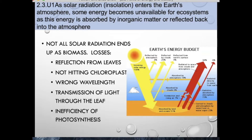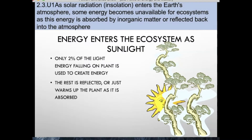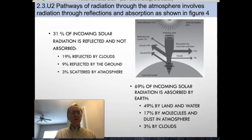A further 69% is absorbed — land and sea absorb some of the energy and are heated. Less than 2% of the Sun's energy is available to plants. Note that the widths of the arrows are proportional to the volume that is reflected, absorbed, and scattered. Energy for our ecosystem all comes from sunlight. Only 2% of the light energy falling on a plant is used to create energy — the rest is reflected or just warms up the plant as it is absorbed. Only a very small fraction of the light from the Sun that does reach green plants is eventually converted to biomass.